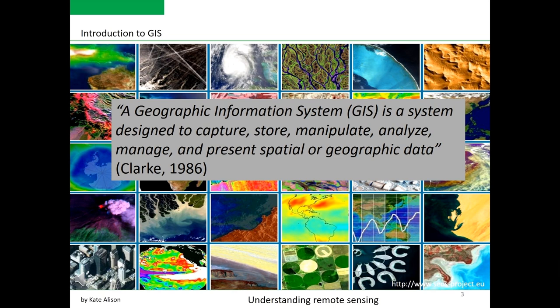Rooted in the science of geography, GIS integrates many types of data. It analyzes spatial location and organizes layers of information into visualizations using maps and 3D scenes. With this unique capability, GIS reveals deeper insight into data, such as patterns, relationships, and situations, helping users make smarter decisions.